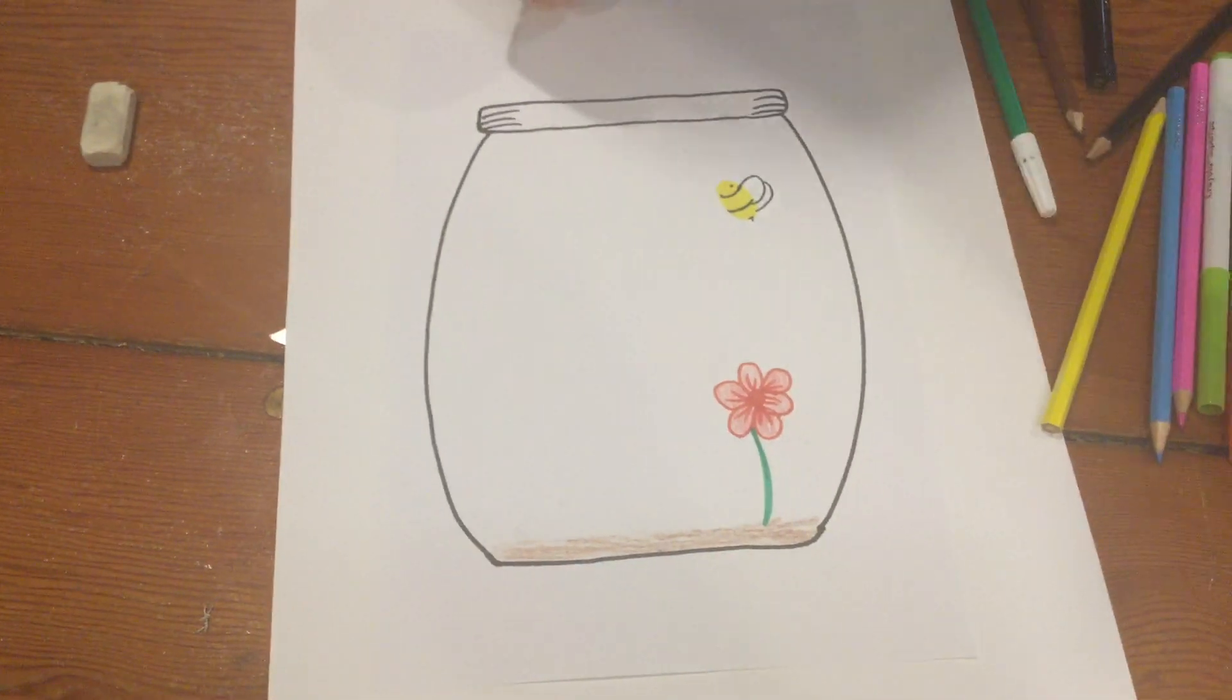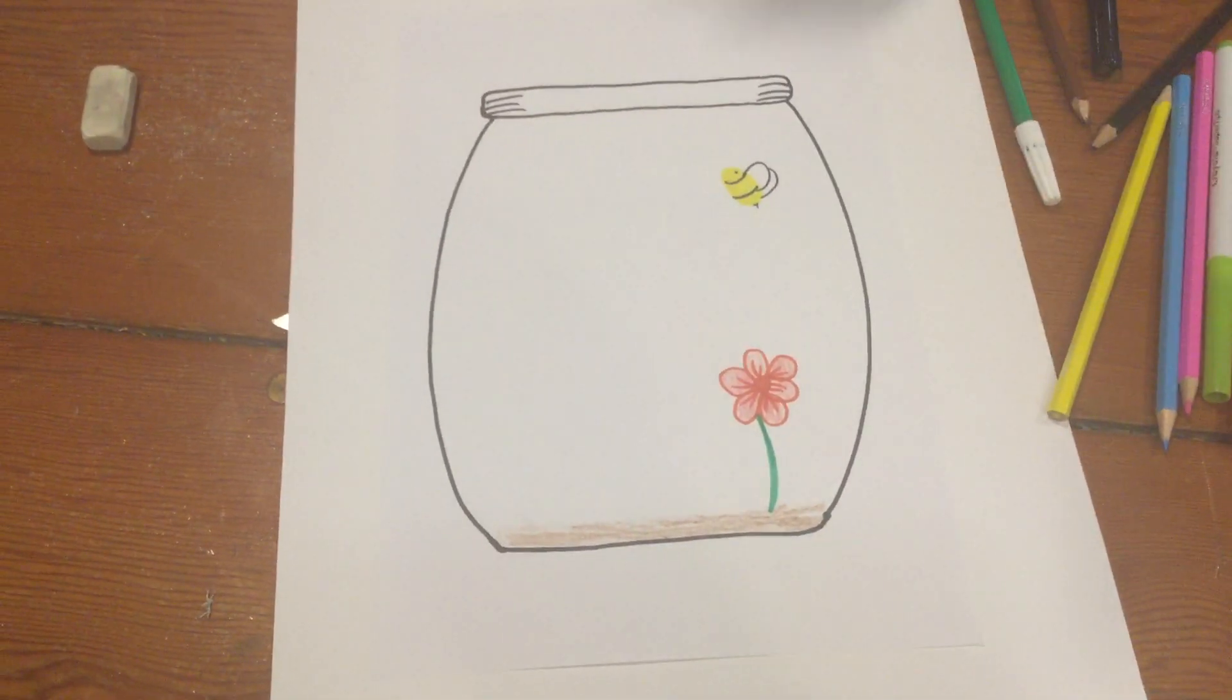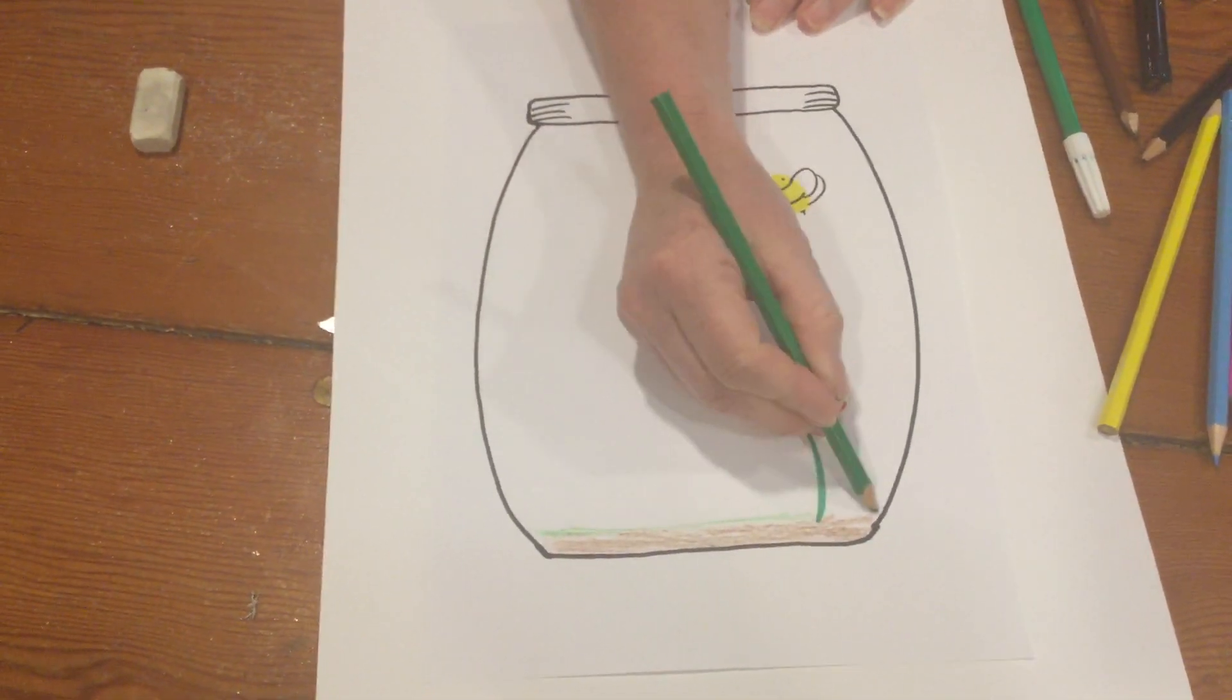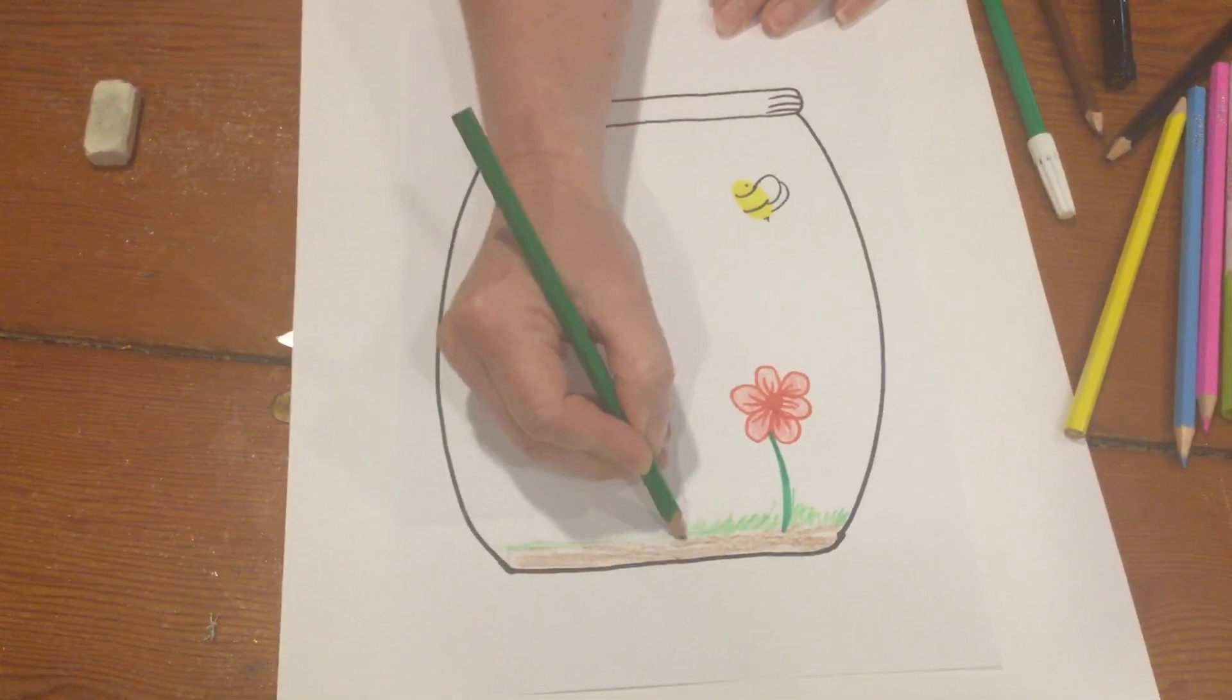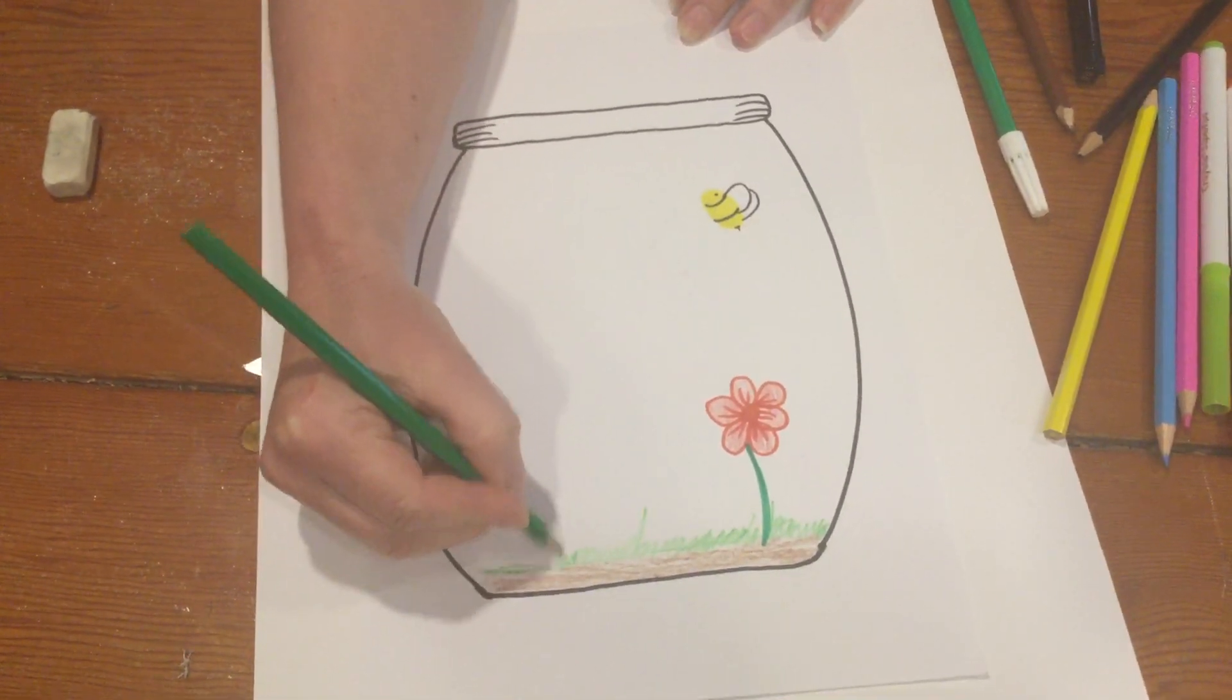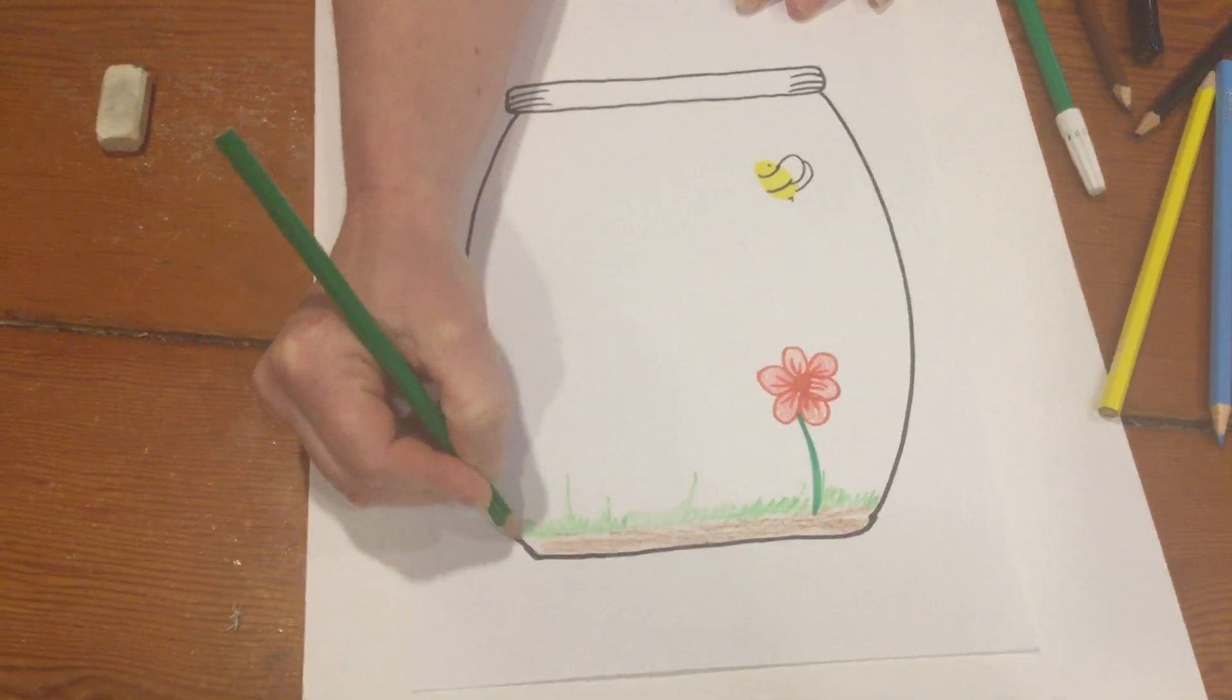Then you can put a little bit of grass in your jar, so you're basically creating a little spring picture in a jar. So I really want you to get a little bit creative. You can put other things in your jar, different colored flowers.